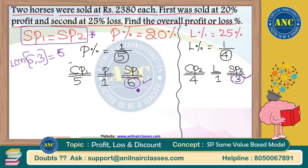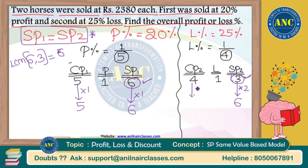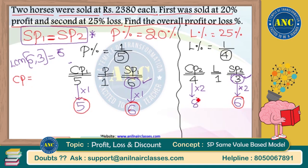LCM of 6 and 3 is 6. The first selling price is 6, which should become 6 — multiply by 1, so cost price 5 also multiplies by 1. The second selling price is 3, which should become 6 — 3 × 2 = 6, so cost price 4 also multiplies by 2, giving 8. Now the selling price of the first product is 6 and selling price of the second product is also 6, satisfying the condition. Total cost price is 5 + 8 = 13 rupees.